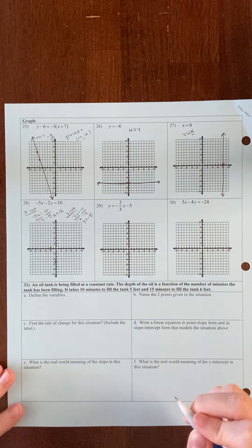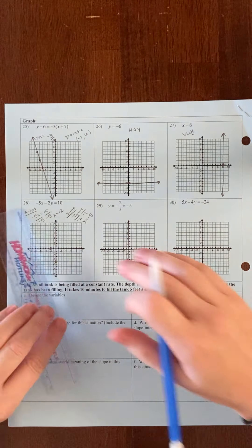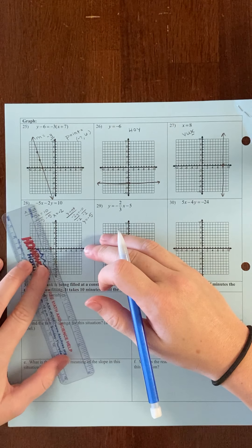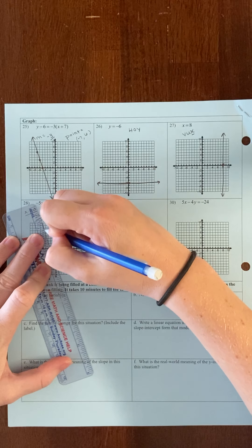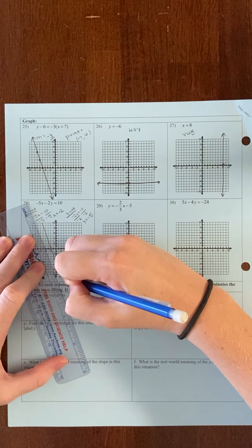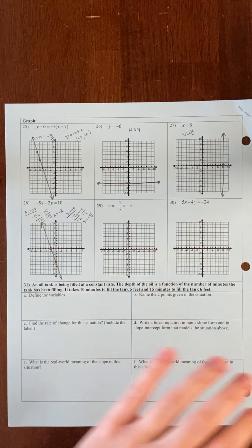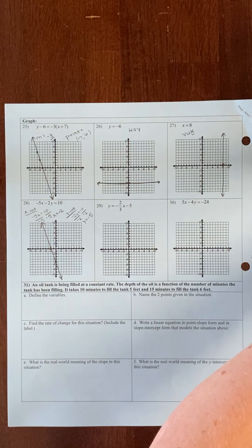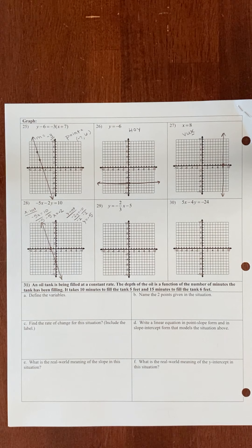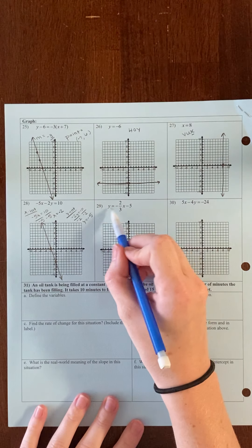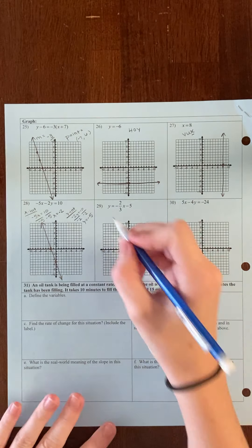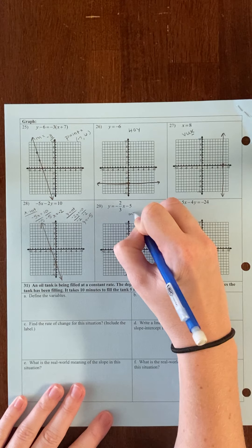The next one is a special case. This is y equals a number, which is a horizontal line — slope of 0. So I'm going to go on the y-axis to negative 6 and draw a horizontal line going through that point at negative 6.